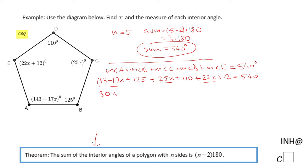And then we have 143 + 125 + 110 + 12. That is 390, which equals 540.